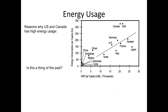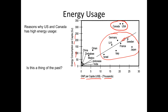Now let's look at energy consumption in the U.S. compared to other countries in the world. This graph is taken from your book. On the y-axis, you have energy consumption per capita, and on the x-axis, you have gross national product per capita in thousands of dollars. You can see that the U.S. and Canada are towards the top, and as you go down this line, you can see where other countries lie — a lot of developed countries in Europe, the Middle East, and Japan, with other countries appearing closer to the origin.